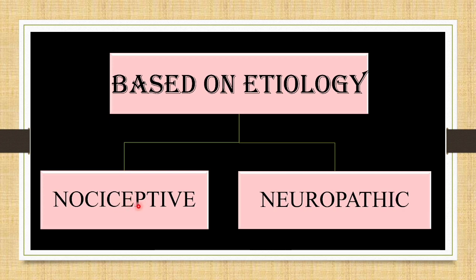Neuropathic pain usually occurs as a result of injury to the central or peripheral nervous system. The type of pain present in neuropathic pain includes shooting, burning, electric-like sensation, tingling, and stabbing types of pain. It can follow a nerve path or be poorly diffuse. Examples of neuropathic pain include phantom limb pain and complex regional pain syndrome.